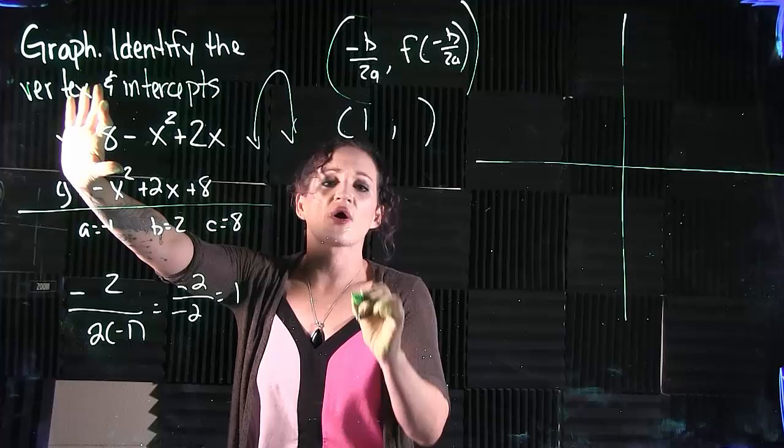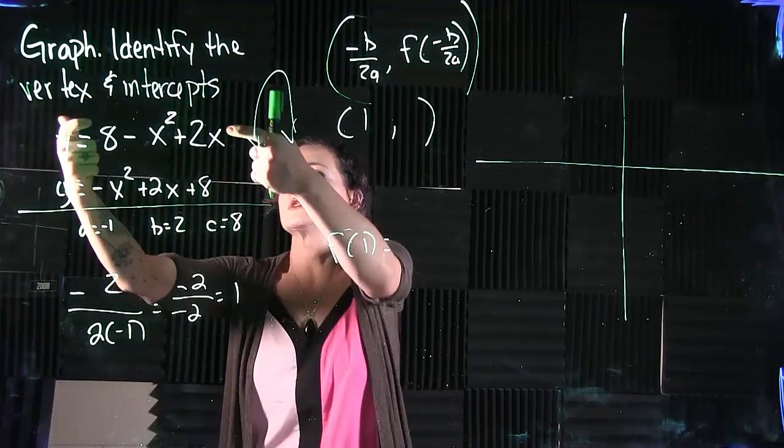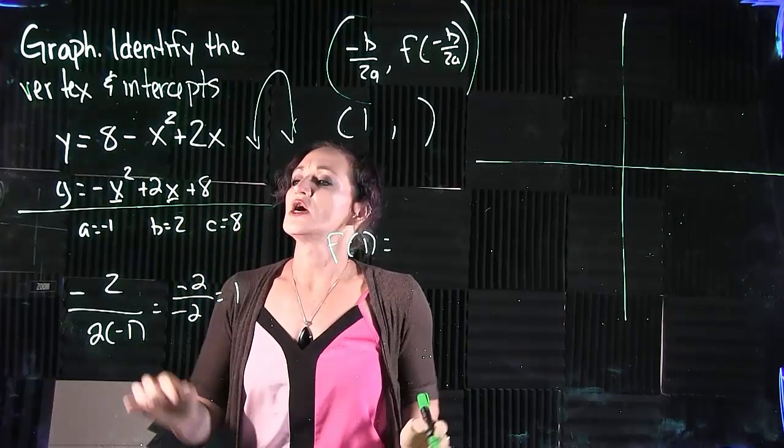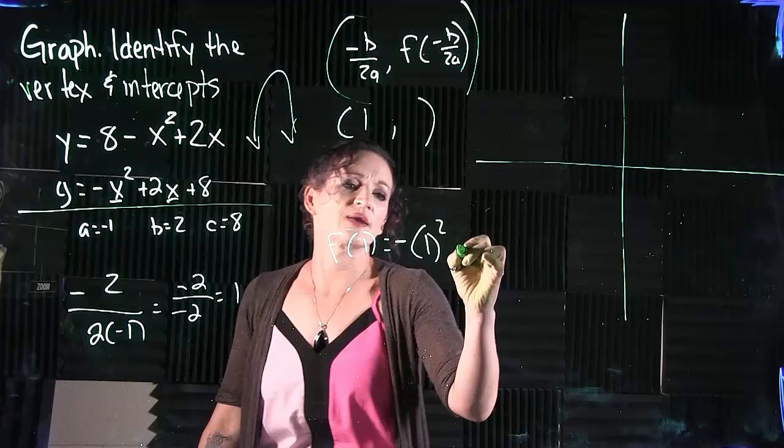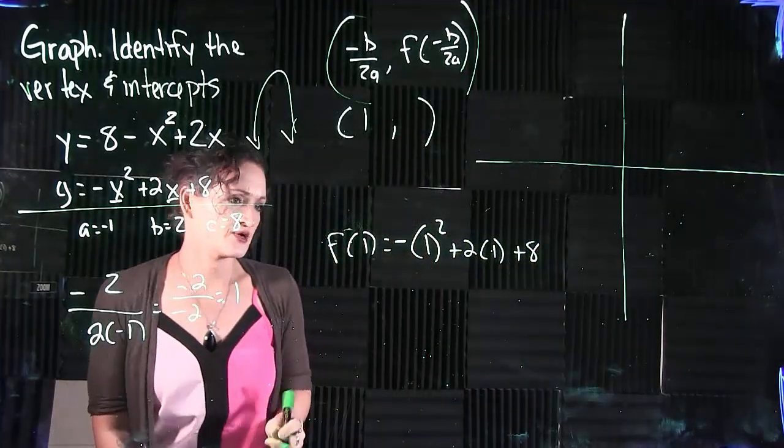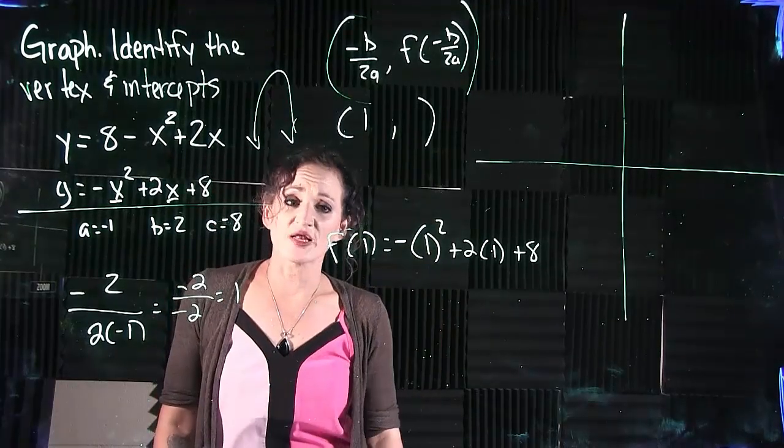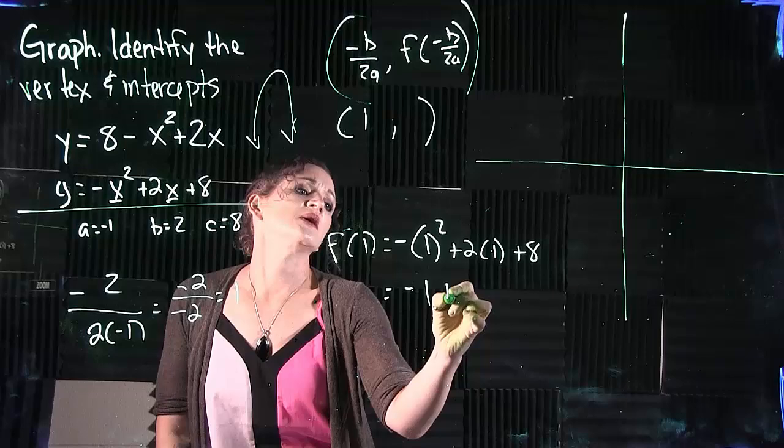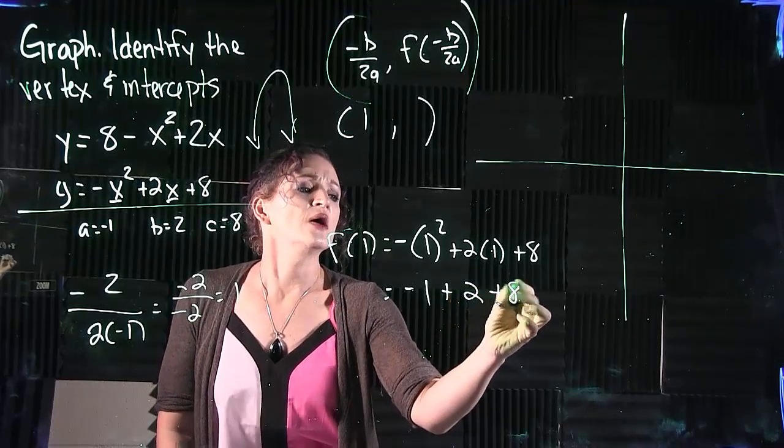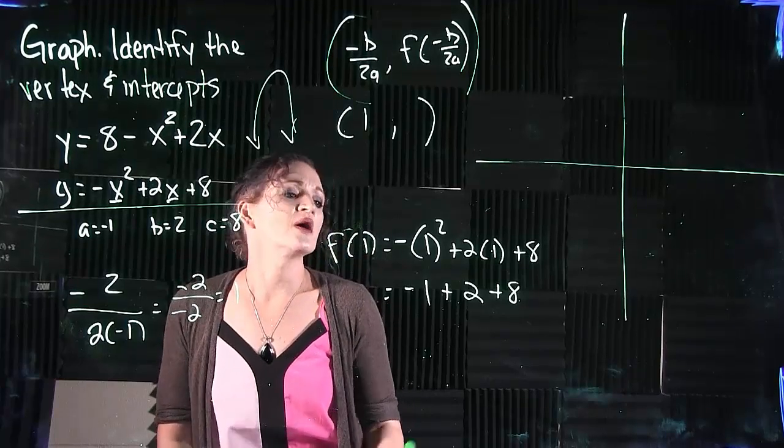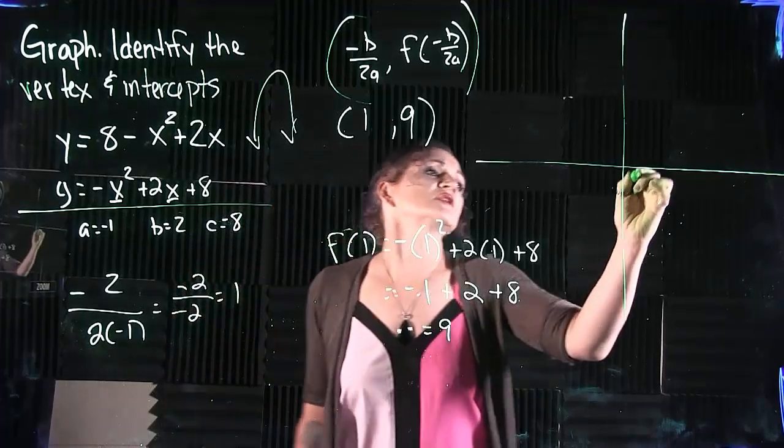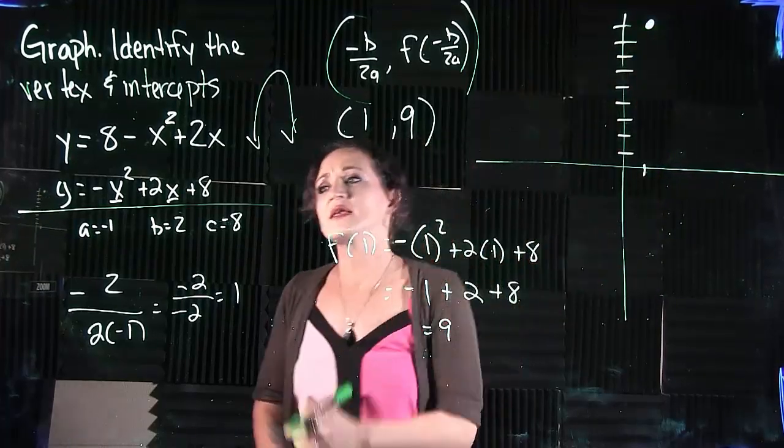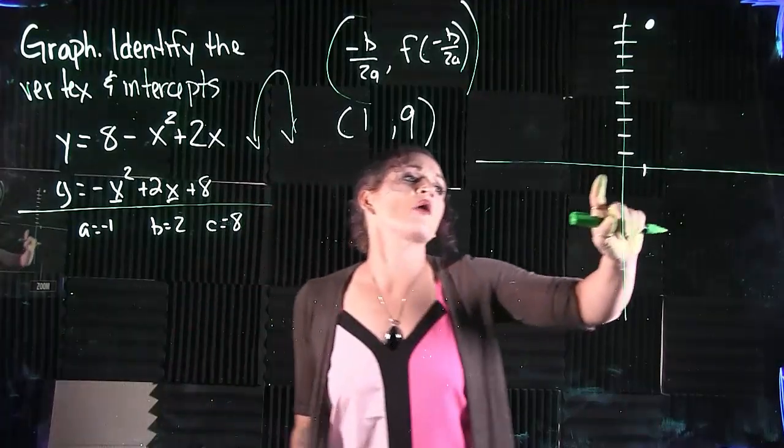If we know the x value, we can easily find the y value. Plug in 1 into our equation. We're finding f of 1. Take our equation, doesn't matter which form of it here, I'm going to go ahead and take this bottom version of it here. We're plugging in 1 for x. So this is negative x squared where x is 1 plus 2 times x plus 8. Simplify this and that will give us our y value for our function. So when we simplify this, 1 squared is just 1, drop down that negative in front of it plus 2 times 1 is just 2 plus 8. Negative 1 plus 2 is 1 plus 8 gives us 9. What that tells us we have a vertex at 1 comma 9 is the vertex to our equation here.